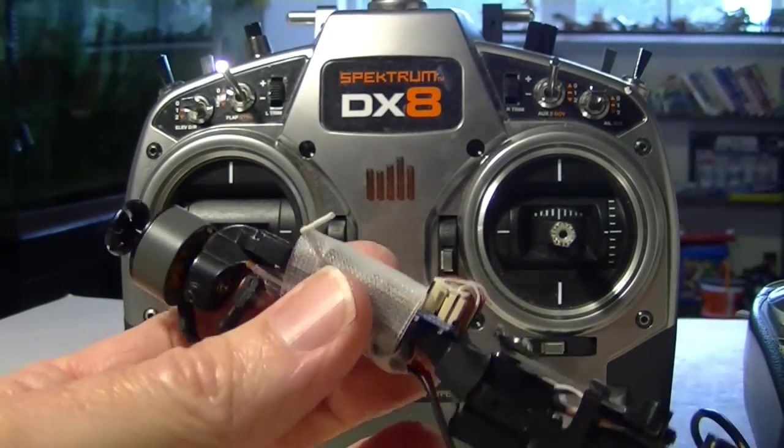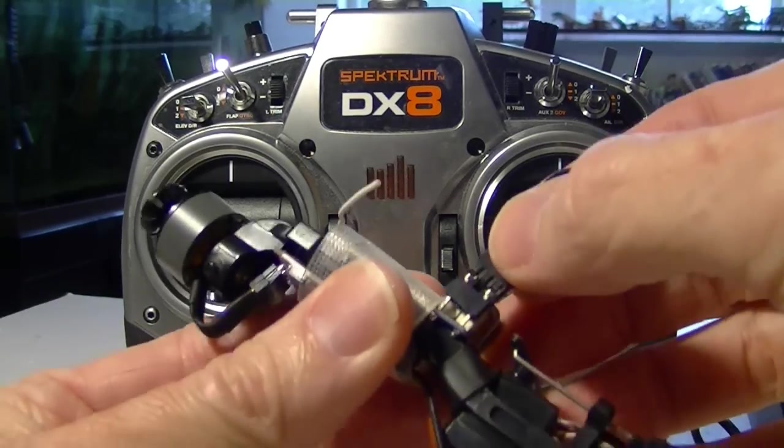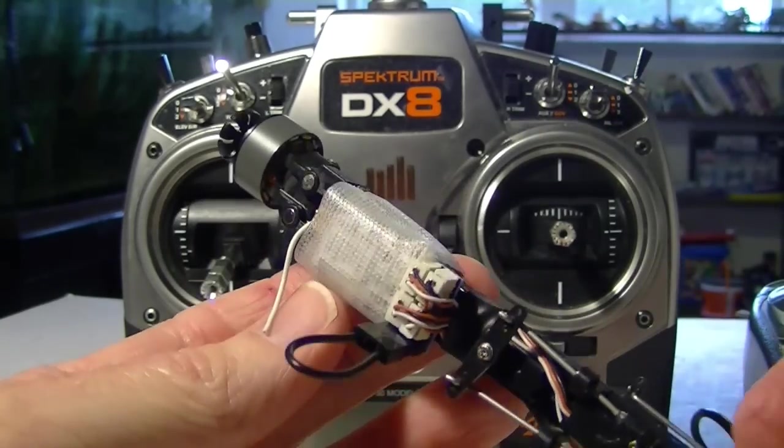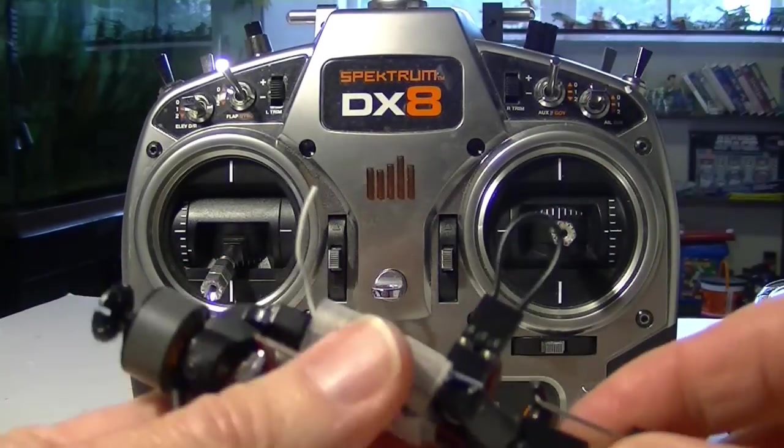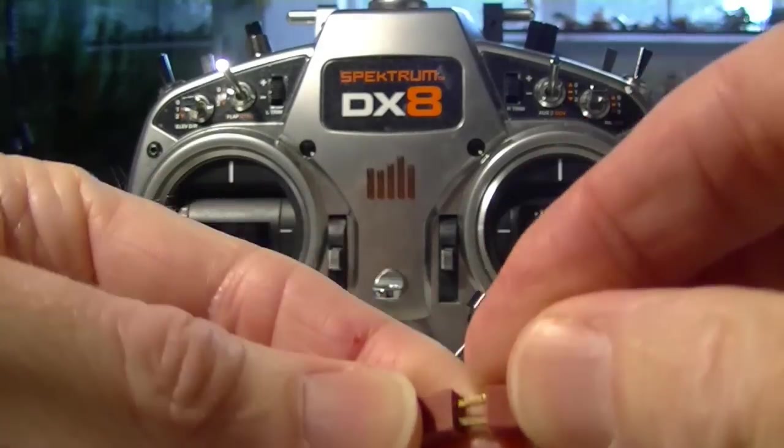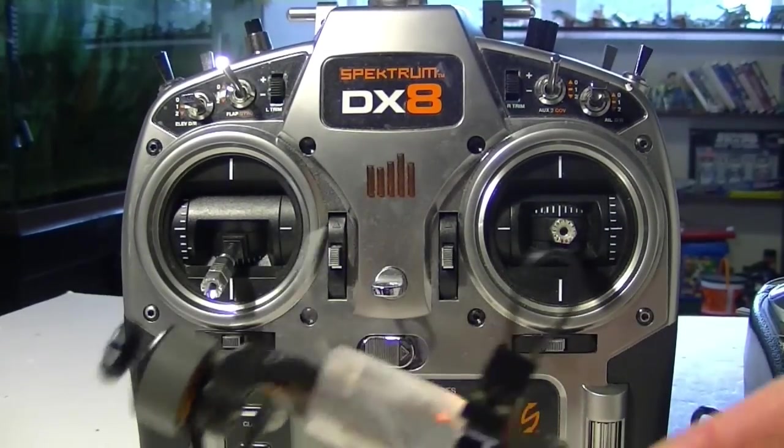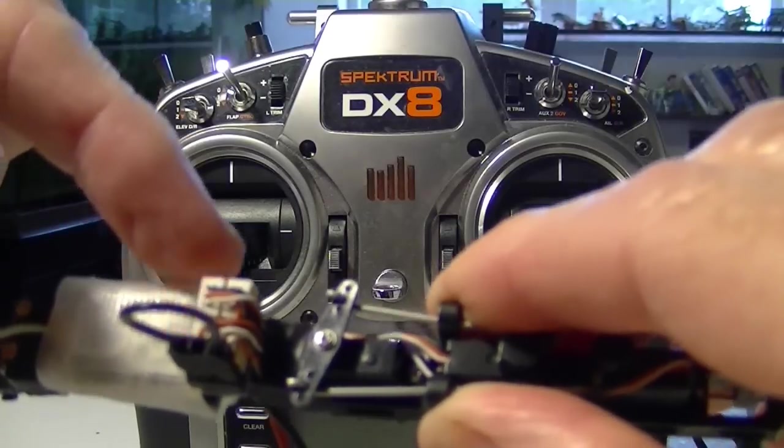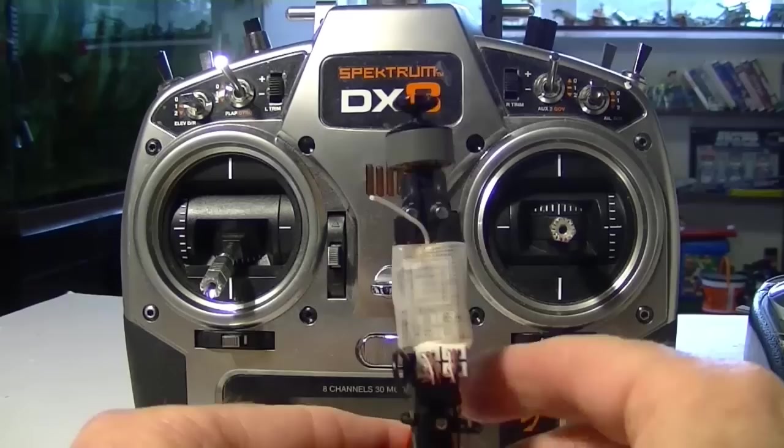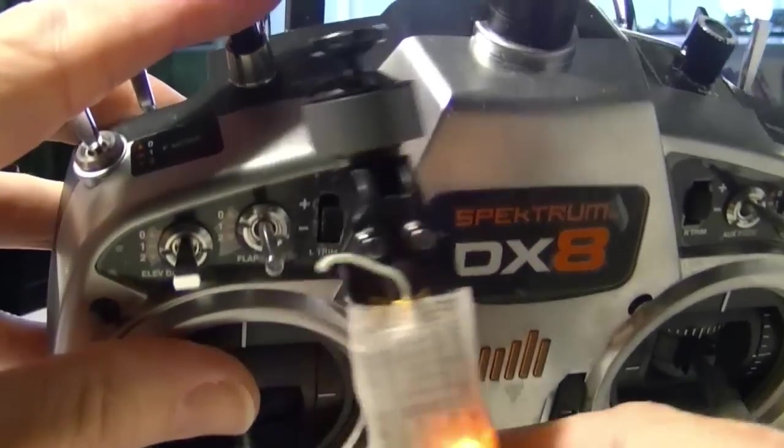Let's test it and see how it works. First thing is we have to bind the HobbyKing R415 to our radio. I'm going to be using the DX8 as an example - you could even use the HobbyKing Orange RX Spectrum radios. Let's put the bind plug on there and plug on the battery. You can hear the beep so we know it's working. You can see the light flashing right here indicating that it's in bind mode.